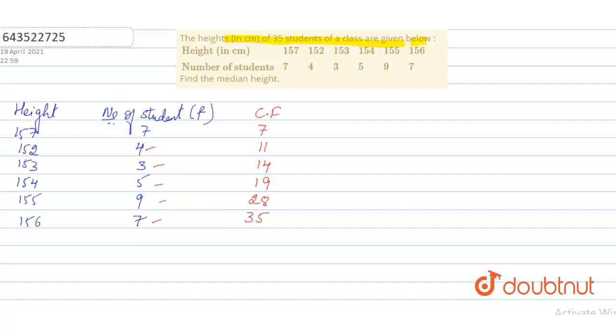Now what is the formula to find out the median? Median equals to n by 2. So n is 35 because 35 number of students, divided by 2 is 17.5.